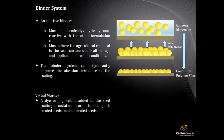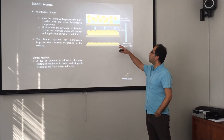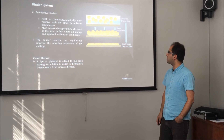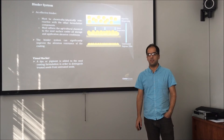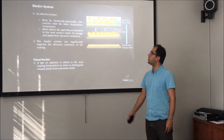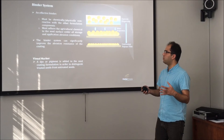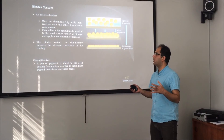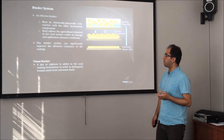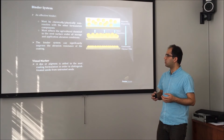The binder is also one of the main components of the coating formulation. It helps all the components adhere to the seed surface. The binder is added to the aqueous dispersion, and during drying, water evaporates and a continuous polymer film is created on the surface. An effective binder should be chemically and physically non-reactive with all other formulation components, and it should adhere all the agricultural chemicals to the seed surface. When the proper binder is selected at the proper level, the abrasion resistance of the coating improves.